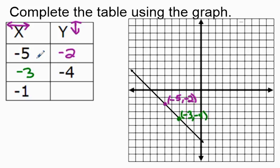For my last point, they give us the x-coordinate of negative one. Starting at the origin, x is horizontal movement, so with a negative I move to the left one space. Anywhere along this vertical line is where the function crosses — it crosses way down here. Counting from the x-axis: one, two, three, four, five, six — and since that was down, it's negative six. So I fill in negative six in my table and we're done.